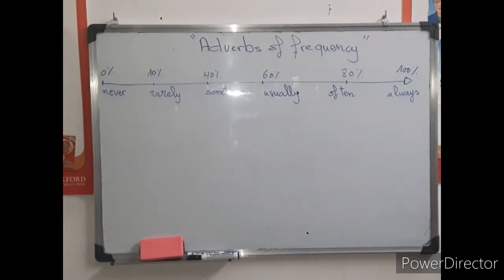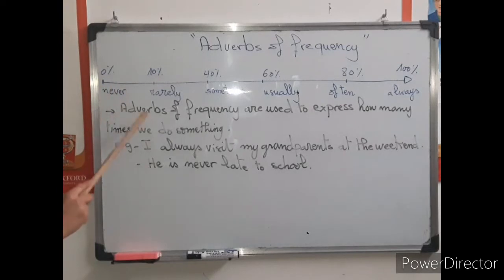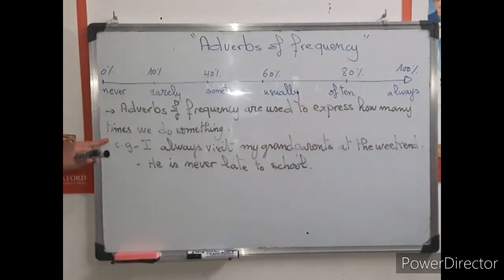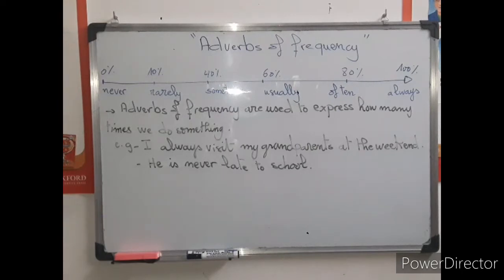Adverbs of frequency are words — adverbs — used to say how many times we do something. Adverbs of frequency are used to express how many times we do something; they express the frequency of the thing. Do you always do it? Do you never do it? Do you usually, sometimes, or often do something?